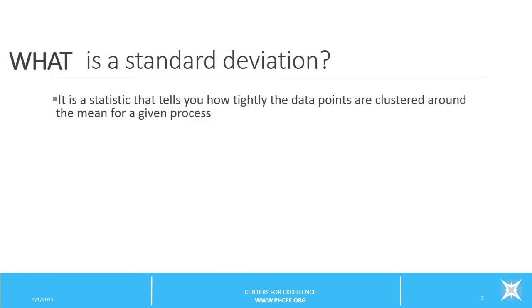So let's briefly review what a standard deviation is. A standard deviation is represented by the lowercase form of the Greek letter sigma. It is a statistic that tells you how tightly the data points are clustered around the mean for a process that you might be studying.